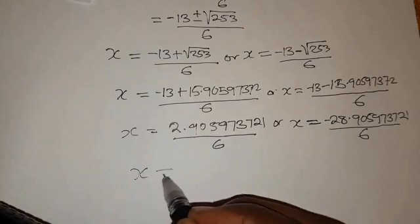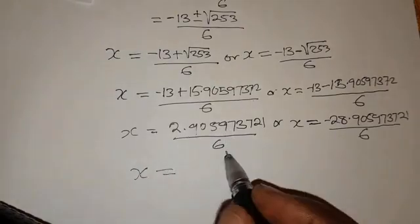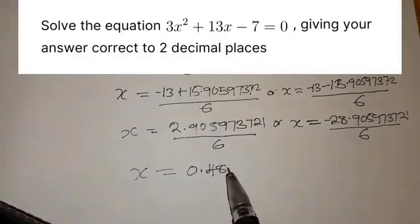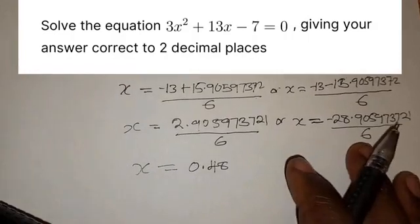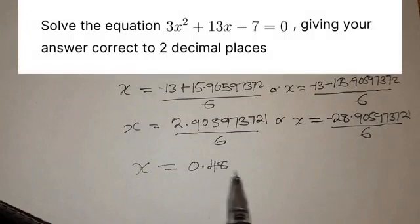So we are going to have x equals, when you divide this by 6, you have 0.48. Remember, they want you to write the answer correct to 2 decimal places. So you have 0.48.